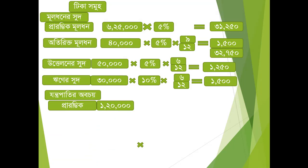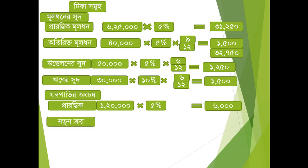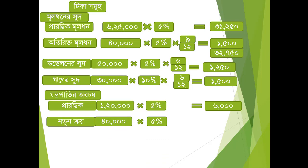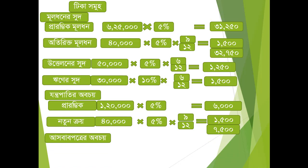Machinery at the start was one lakh 2,00,000 taka. On top of that, the rate is 5%. Before 1st April means 9 months. So I divide this amount by 12 and multiply by 9, the result becomes 1,500. So total machinery depreciation comes to 75,000.